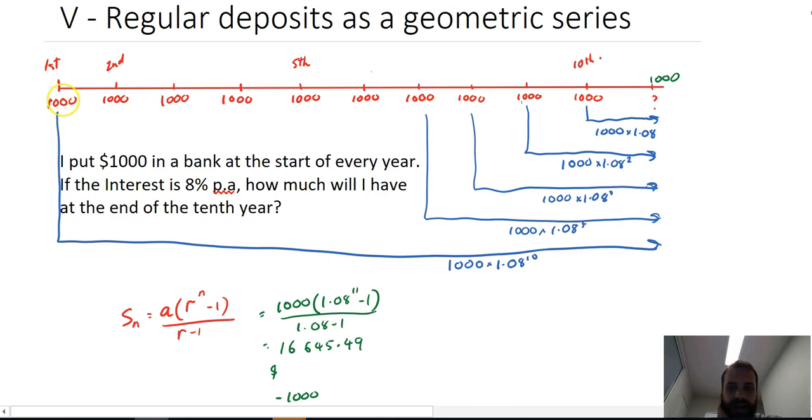Maybe the $1,000 isn't at the start of the year. Maybe it's at the end of the year. And that shuffles everything forward and changes the way that everything works. Maybe it's happening every month, which is going to change that 8% per annum to 0.08 divided by 12. There's a lot of different factors that go into a question like this.